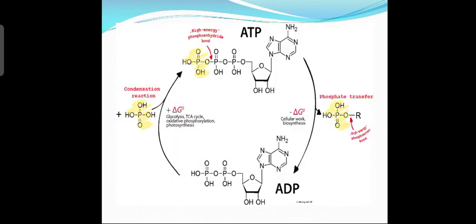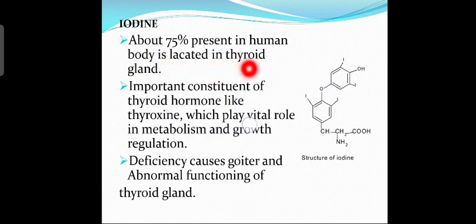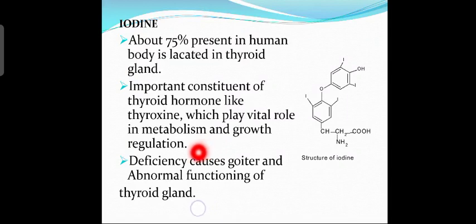This reaction shows the conversion of ATP into ADP and ADP into ATP, though this is not included in the syllabus. Regarding iodine, about 75% present in the human body is located in the thyroid gland. Iodine is an important constituent of thyroid hormone, like thyroxine, which plays a wider role in metabolism and growth regulation.